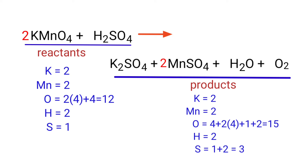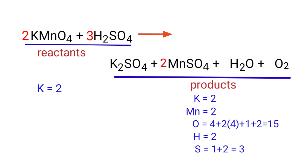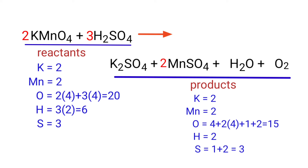The Manganese atoms are balanced. Now we need to balance the Sulphur atoms — to do this we need to put a coefficient of 3 in front of H2SO4. The Sulphur atoms are balanced. Now we need to balance the Hydrogen atoms — to do this we need to put a coefficient of 3 in front of H2O.